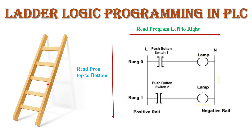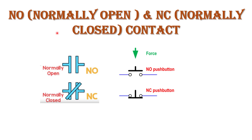In ladder logic diagram, all inputs are given in the form of NO or NC contact. NO is normally open contact and NC is normally closed contact. Normally open contact is represented just like a capacitor symbol, and normally closed contact is shown like a capacitor symbol with a diagonal line over it.